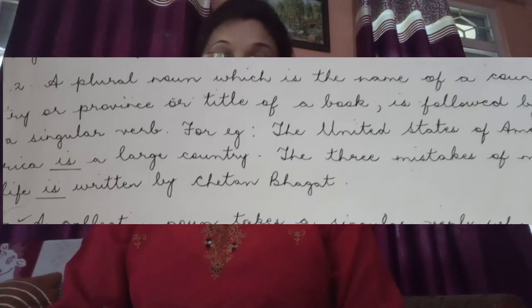A plural noun which is the name of a country, province, or title of a book is followed by a singular verb. Like 'the United States of America is a large country' — a singular verb is used. 'Gulliver's Travels is an interesting book for children' — you might think this is a plural subject, but it is the name of a book, so it takes a singular verb.